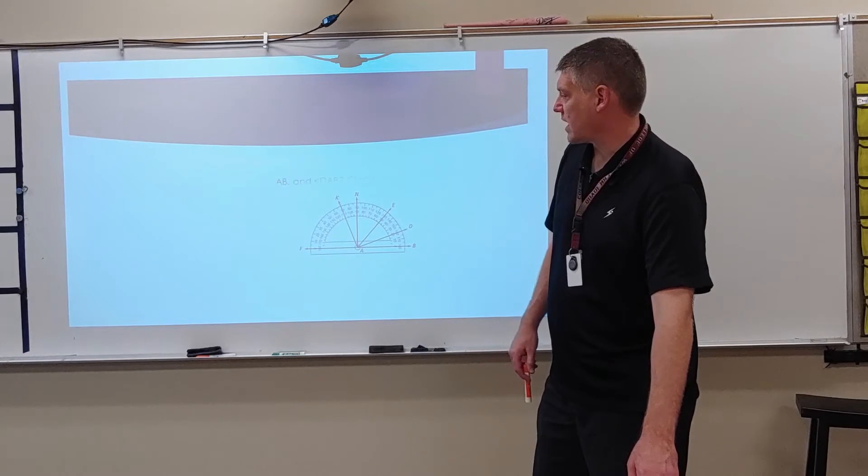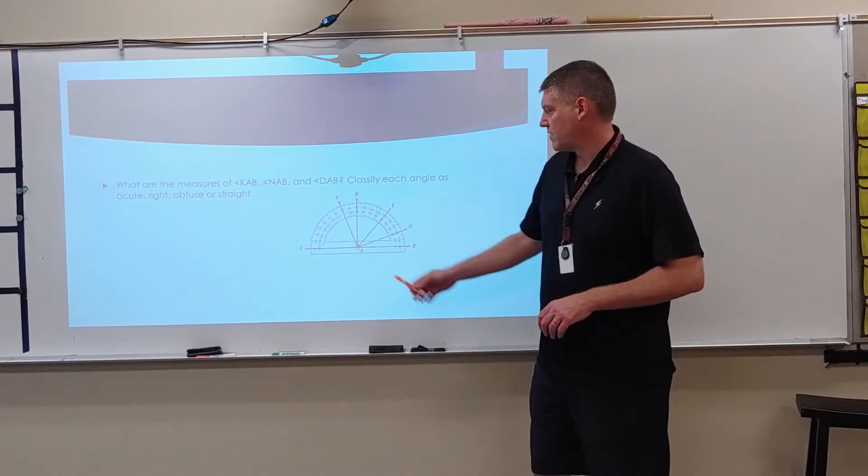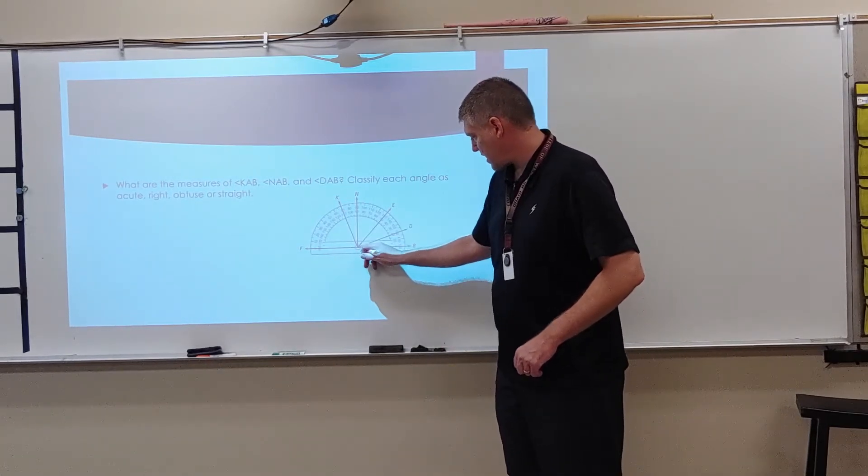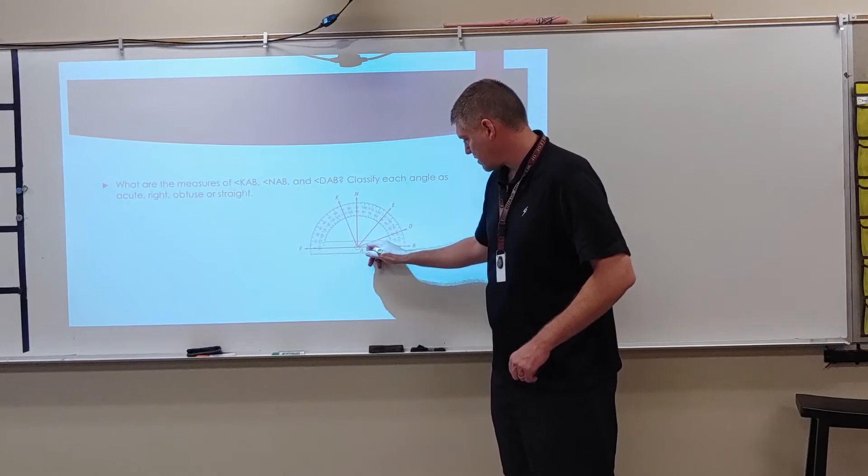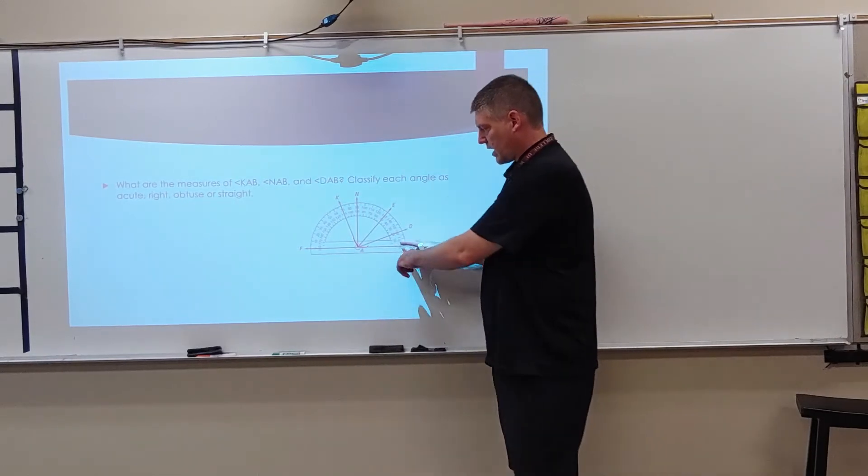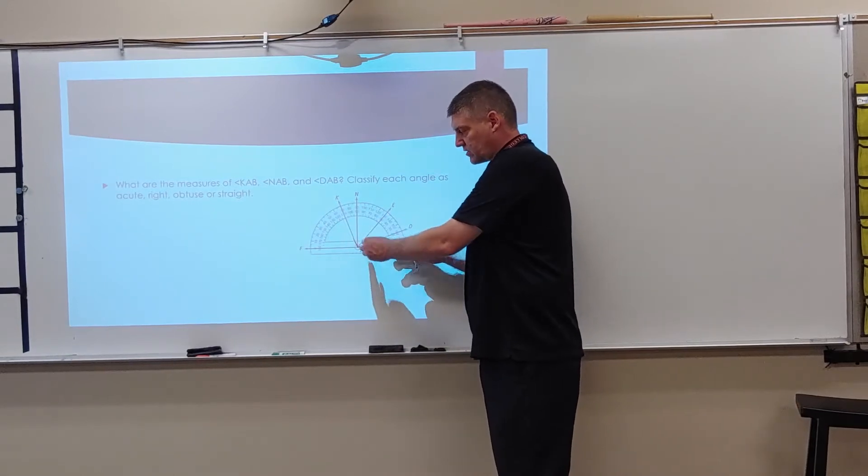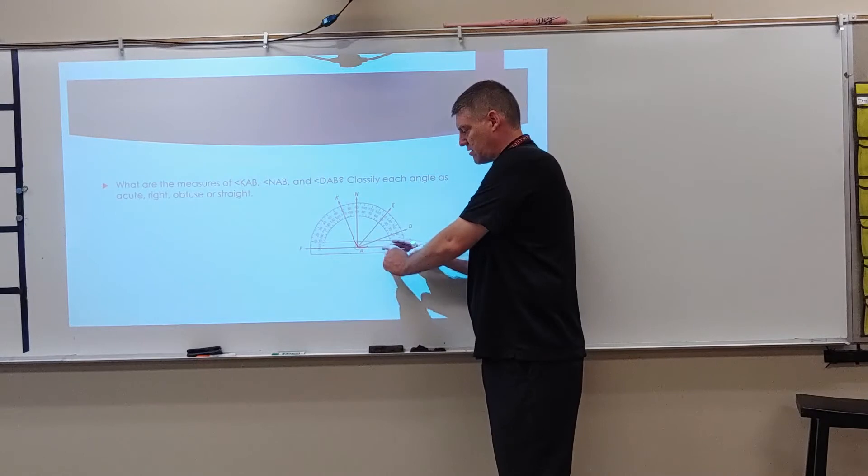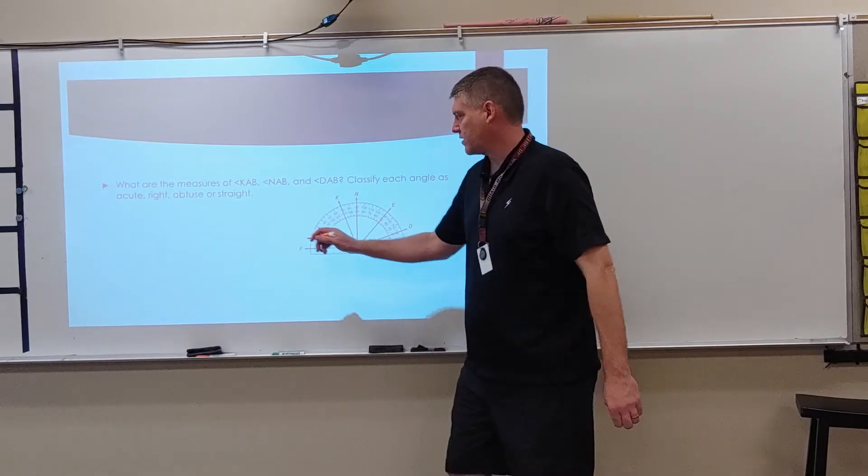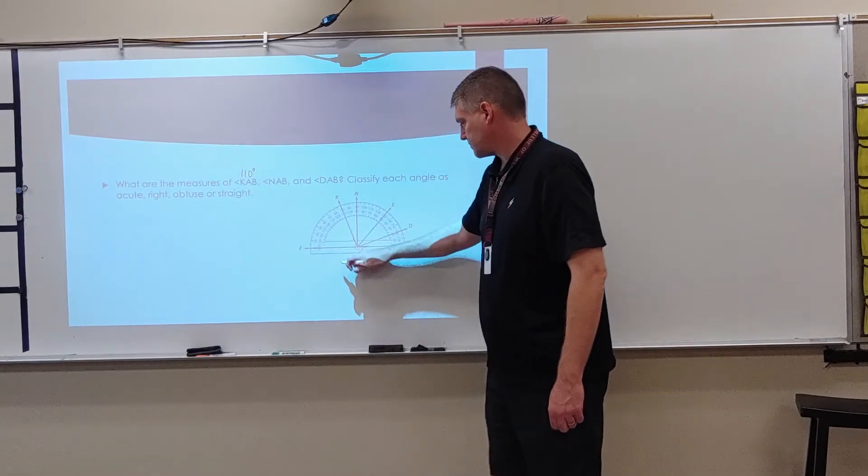All right. So here's our diagram. So it says, what are the measures of KAB? So let's look at KAB. So we're going to be here. KAB. So we're right here. Right here. So I'm going to go, I'm on the, going from this right side, I'm measuring it here. So I'm going to look at the inside numbers here. So I come up here. So I come up here. It's 110 degrees. 110 degrees.